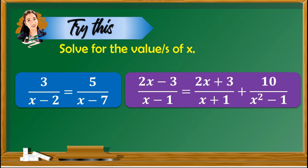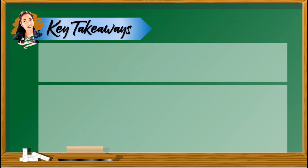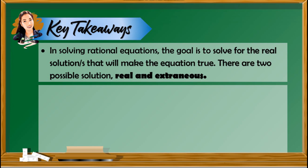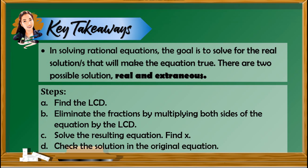After providing different examples of rational equations, now is the time to apply what you have learned in these practice exercises. You may pause the video to answer the problems. Let's check our work. For the first equation, the answer is negative 11 over 2. For the second equation, the answer is x equals negative 5. Here are the key takeaways: in solving rational equations, the goal is to solve for the real solutions that will make the equation true. There are two possible solutions: real and extraneous. The steps are: first, find the LCD; second, eliminate fractions by multiplying both sides by the LCD; next, solve for the resulting equation; and lastly, check the solution in the original equation.